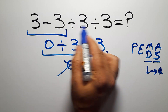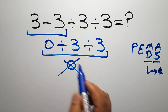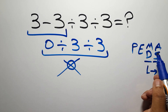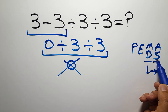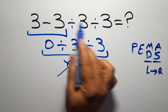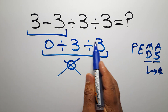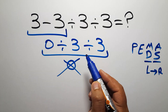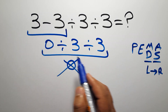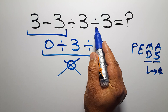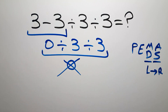In this expression we have two divisions and one subtraction. In PEMDAS, division comes before subtraction, and when we have more than one division in an expression we have to work from left to right. So first we have to do this division, not this subtraction. After this division we do the next division, and finally this subtraction.